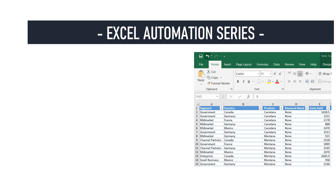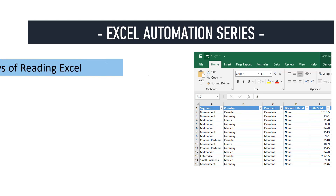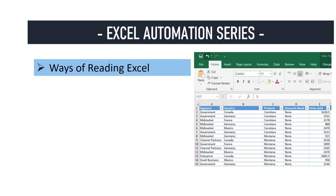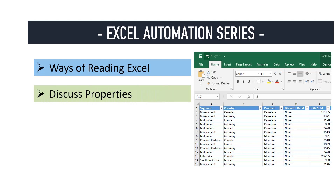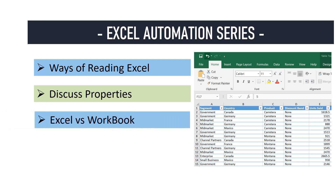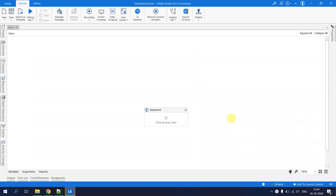Welcome back to the channel. Today we are starting a series called the Excel Automation series, which will cover all Excel-related automation in UiPath Studio. This is the first video. The agenda includes: different ways of reading Excel in UiPath, discussing properties and how changing them affects automation, and the difference between Excel versus Workbook activities with a demonstration.